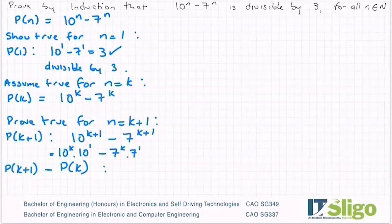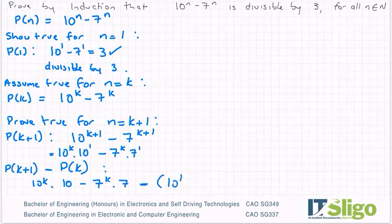So let's do that and see where it brings us. If p of k plus 1 is 10 to the power of k by 10 minus 7 to the power of k by 7, and I want to subtract off that 10 to the power of k minus 7 to the power of k.